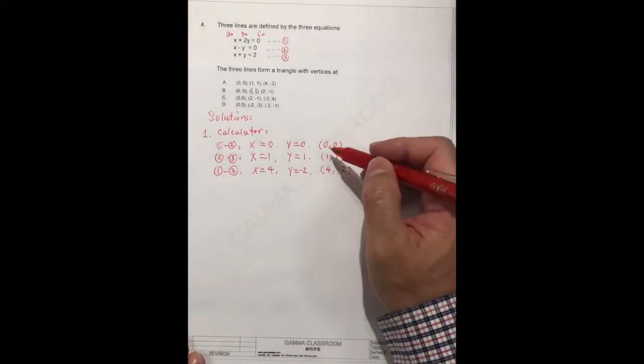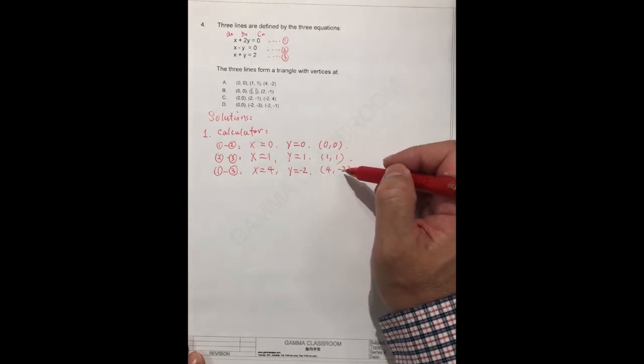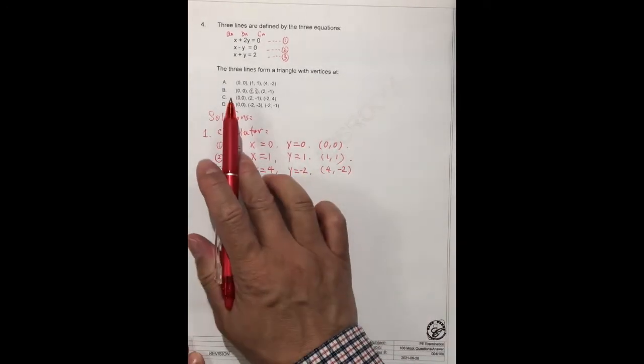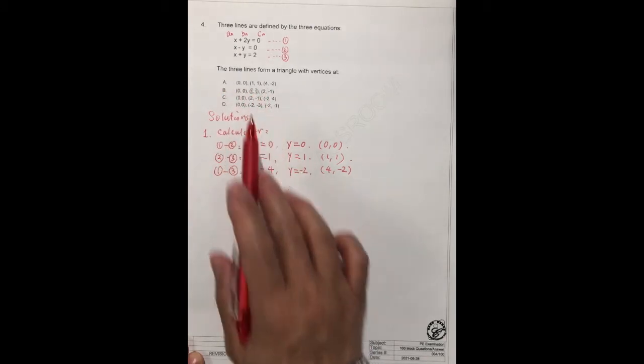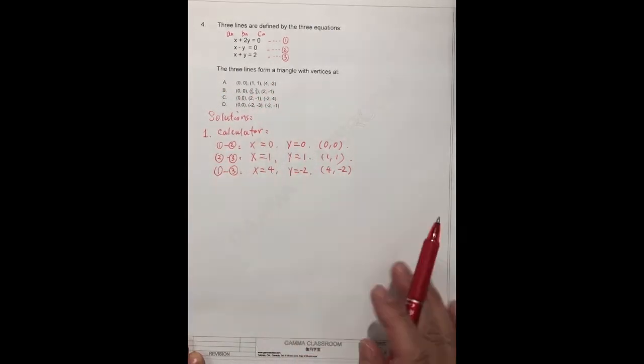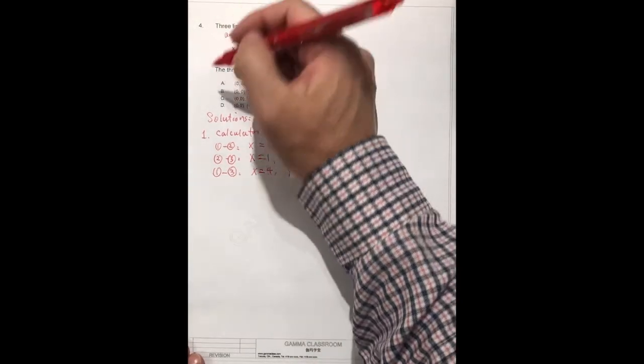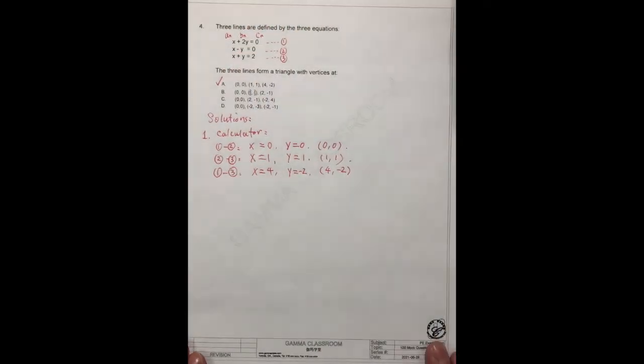So they have 3 points. It's 1, 2, 3: 0, 0; 1, 1; 4 and minus 2. We can check the answer. They have A: 0, 0; 1, 1; 4 and minus 2. So the correct answer should be A. It should be A.